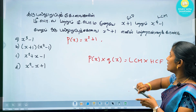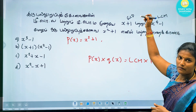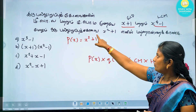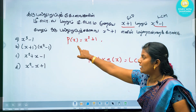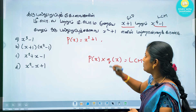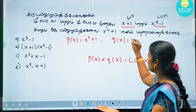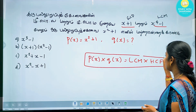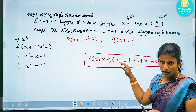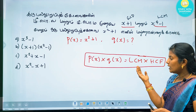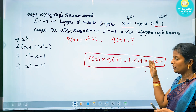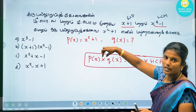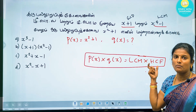So the answer uses GCD and LCM. Now for the next question, we have HCF and LCM of two polynomial values. There is an important rule: the product of two polynomials is equal to the product of their LCM and HCF.